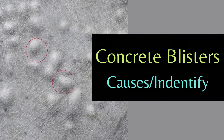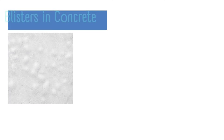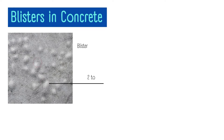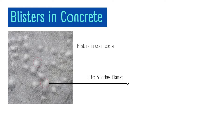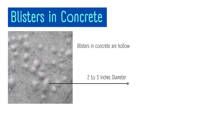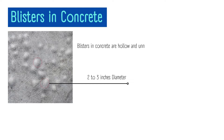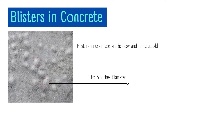Blisters in concrete are hollow and unnoticeable nodules observed on the concrete surface. Their size ranges between one and three inches in diameter, based on the extremity of the defect.